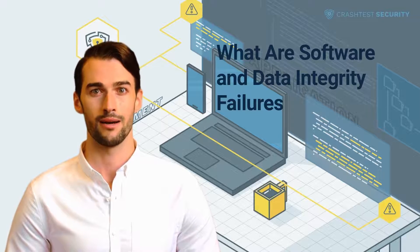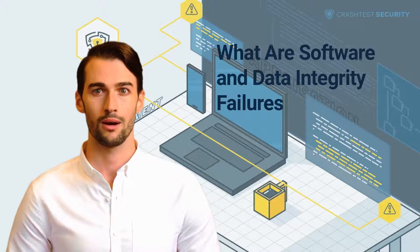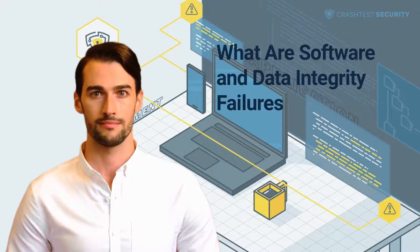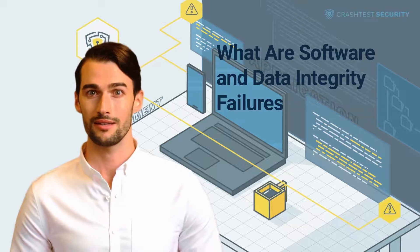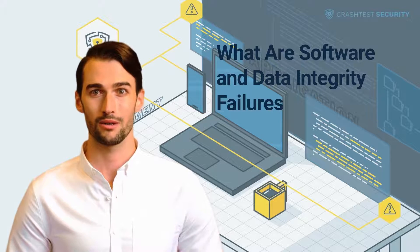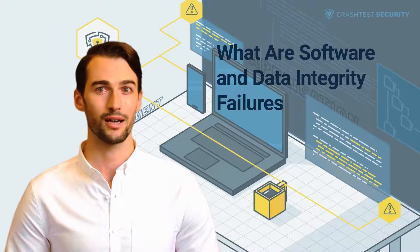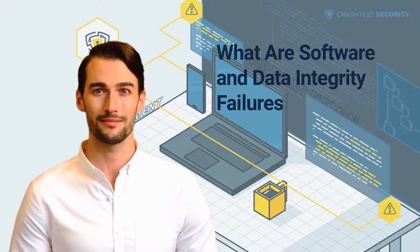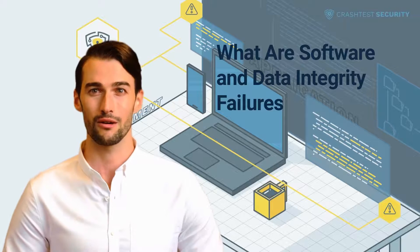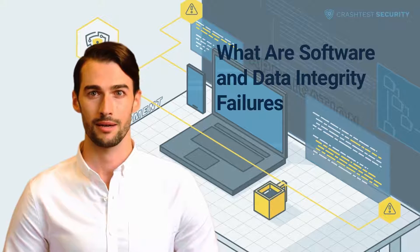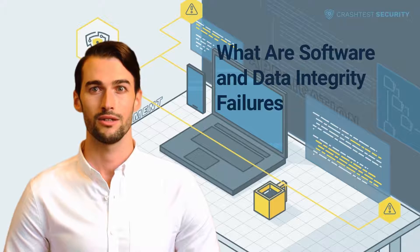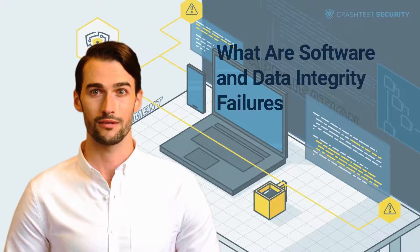This results in corrupted payloads being deployed and executed outright on application installations. The vulnerability of software and data integrity failures is a new entrant to the OWASP Top 10 2021, categorized as A8. The entry covers various application security weaknesses that may lead to insufficient integrity verification.